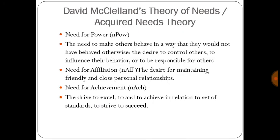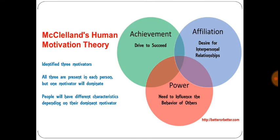The fourth theory is David McClelland's theory of needs, also known as the acquired needs theory. McClelland divided the needs into three categories: need for power, need for affiliation, and need for achievement. All three are present in each person, but one motivator will dominate. People will have different characteristics depending on their dominant motivator.